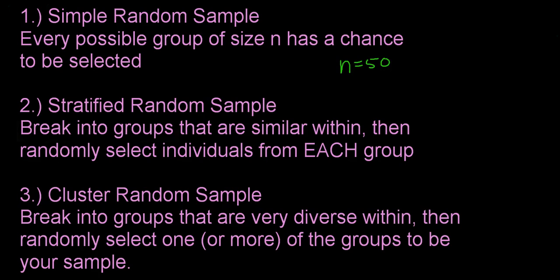All right, stratified random sample. Here, you break your population into groups that are very similar within. Then you randomly select individuals from each group. I capitalize each there because that's the key. So, let's just say you're going to break your population down into age. People that are 18 to 28, 28 to 38, 38 to 48, 48 to 58, 58 to 68, 68 to 78. So you break everybody down to these groups based on age.